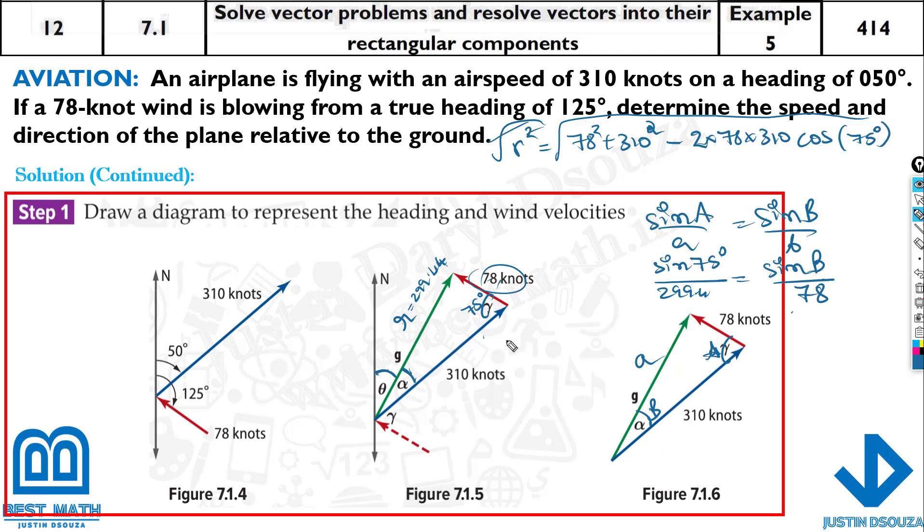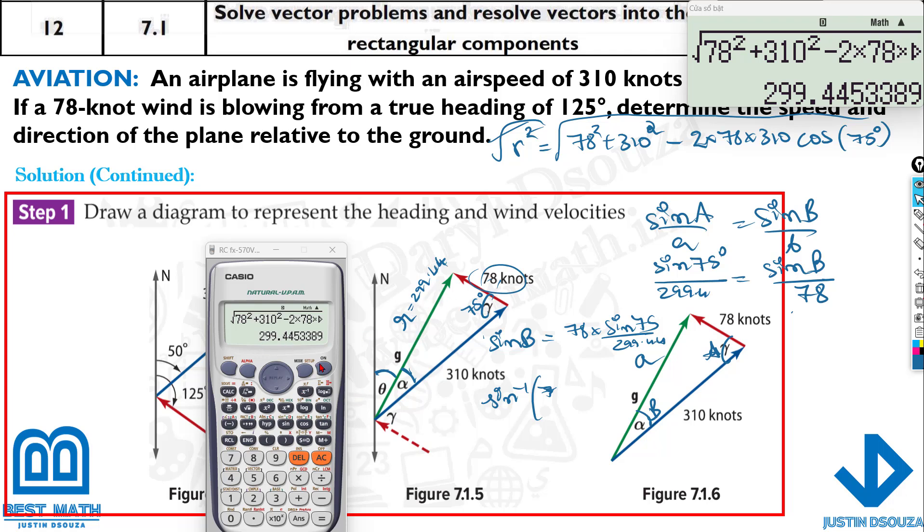I'll write sine B first. Sine B will be equal to 78 multiplied by sine 75 divided by 299.44. But how do you find B? We need the angle. So you need to take sine inverse on both sides. So it's sine inverse of this entire thing. Now, sine inverse of 78 times sine 75 divided by 299.44. We're getting an error. I've not closed the bracket. That's the reason for the error. The answer is 14.57 degrees.